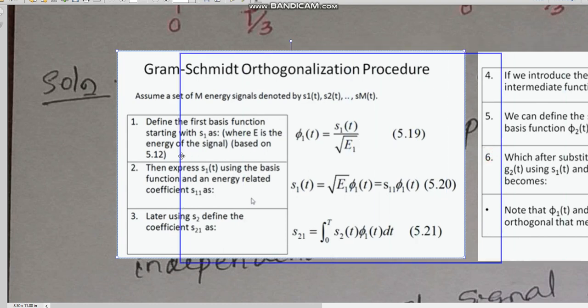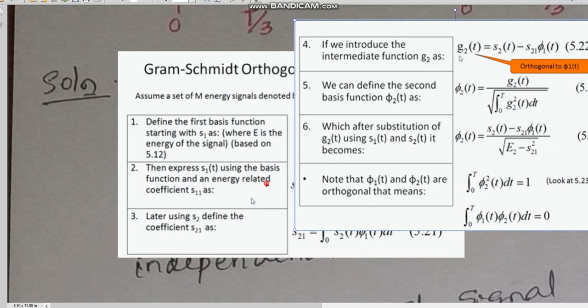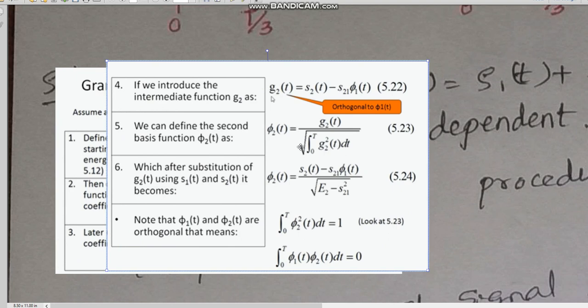After this, we introduce the intermediate function G2. G2 is given by this equation. This is one form of the general equation of GI of t, which we see in the next slide. So G2 can be calculated like this. S21 we have already calculated which we can substitute. Phi1 also we have calculated. S2 of t is the value of the signal S2.